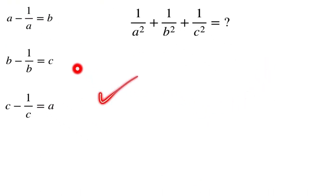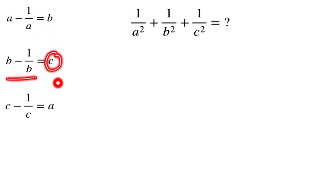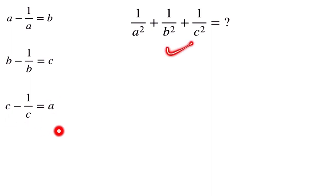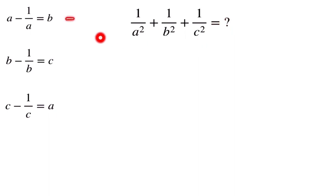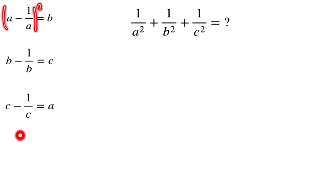This is our question: a minus 1/a equals b (equation 1), b minus 1/b equals c (equation 2), and c minus 1/c equals a (equation 3). We have to find the value of 1/a² + 1/b² + 1/c².